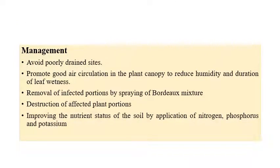For management of red rust, avoid poorly drained sites, as proper drainage helps control the disease. Providing air circulation in the plant canopy reduces humidity and the duration of leaf wetness, which is critical since higher humidity and leaf wetness favor algal diseases. Spraying of Bordeaux mixture at one percent and destruction of affected plants are also recommended, along with proper application of NPK fertilizer.